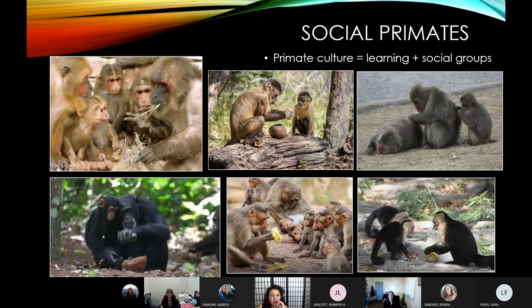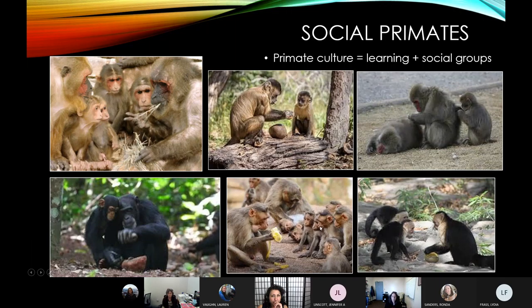Here are a couple of examples of that social ability — these are cases where primates are learning, mostly tool use. In the bottom left image, you can see a chimp teaching a baby chimp how to crack open nuts with a rock. In the second image on the top, some New World monkeys also use rocks to access food. In the bottom middle, baboons appear to be teaching young how to eat different food types. In the top right, primates are grooming each other, which is a really social trait.